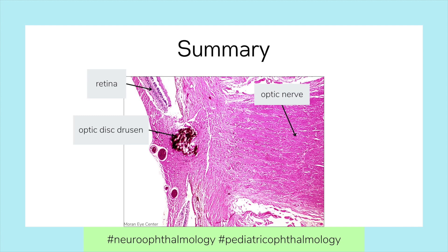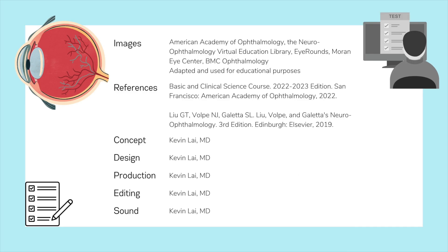Histologically, Optic Disc Drusen are basophilic and may contain calcium, mucopolysaccharides, and iron. There is no proven treatment for optic nerve drusen.